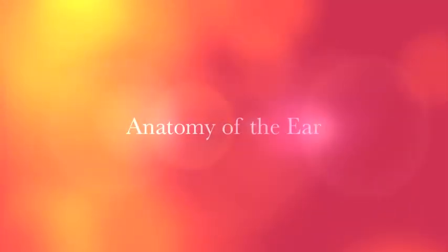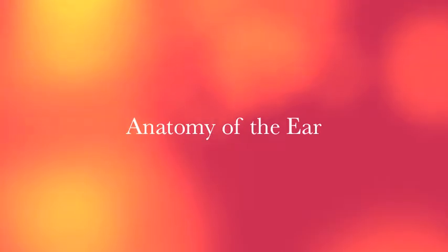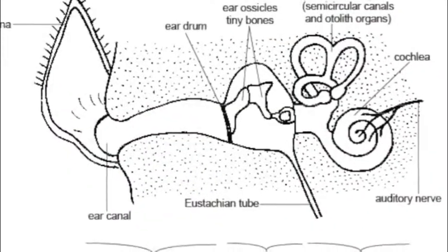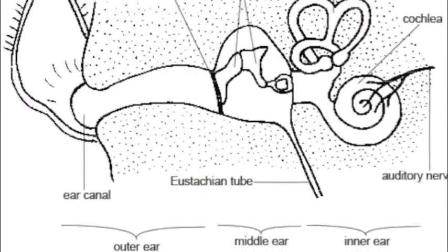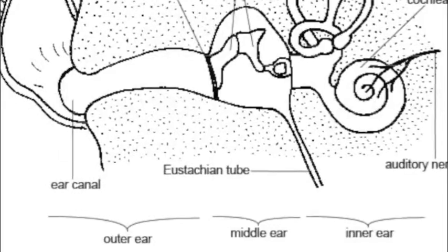The ear is an organ that enables hearing and helps maintain balance. The ear consists of three sections: the outer, middle, and inner ear.